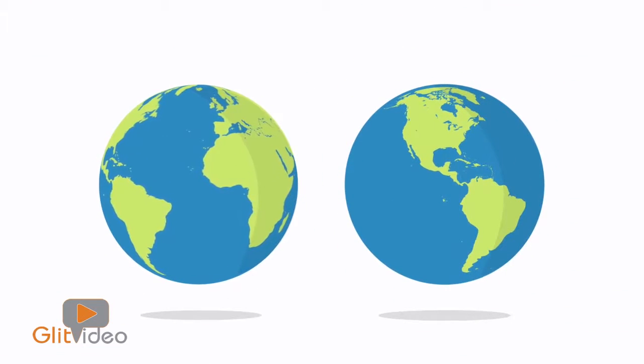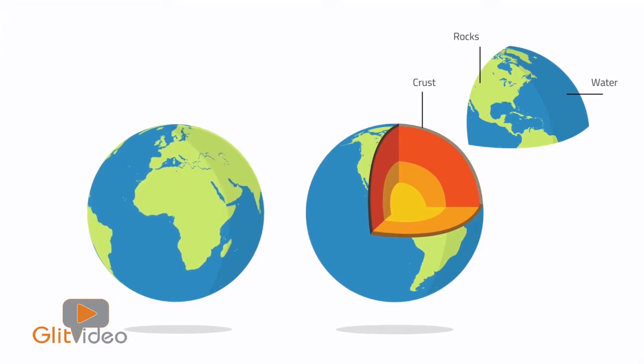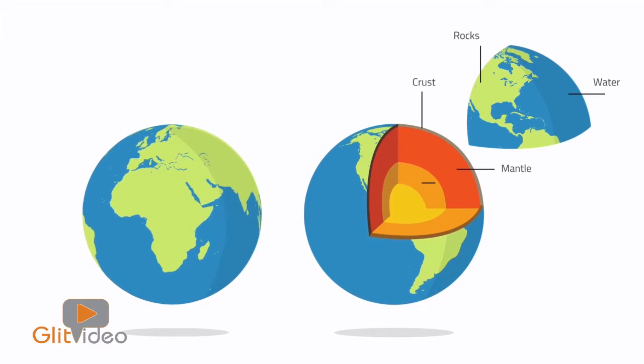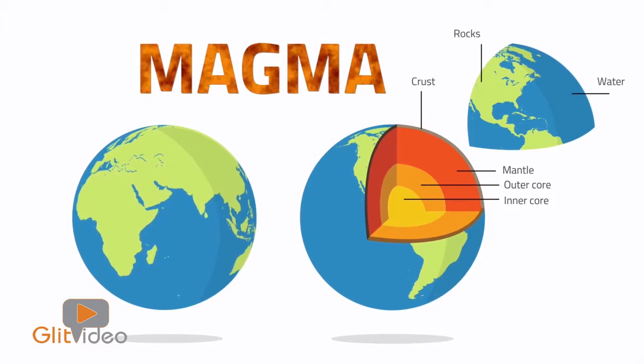The deeper you travel into the Earth, the hotter it gets. The Earth's crust is made of rocks and water. Underneath the Earth's crust is a layer of hot molten rock called magma, which is even hotter than the Sun's surface.